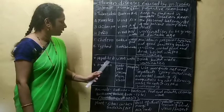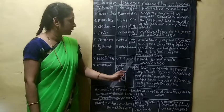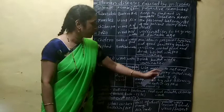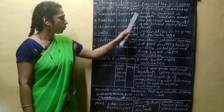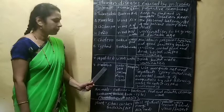Hepatitis A is a viral disease transmitted through water and drink. The preventive measure is to drink boiled water and take vaccination. Its mode of transmission is through water.